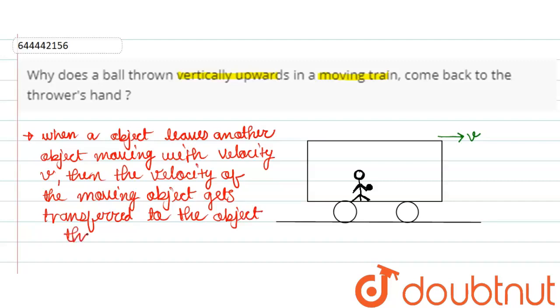Now, using this concept, let us analyze the problem. First, we are given that the ball is thrown vertically upwards. Using the concept we can say that when the ball is thrown vertically upward, the velocity v also gets transferred to the ball.